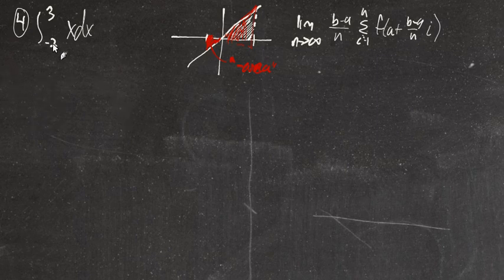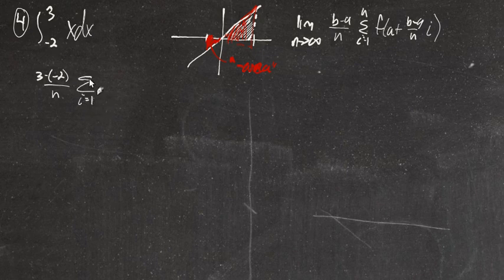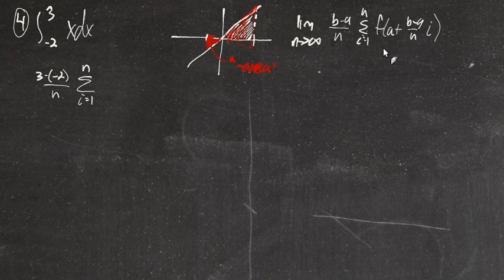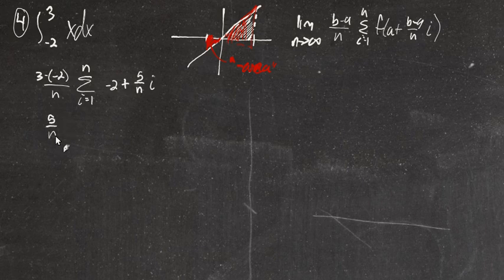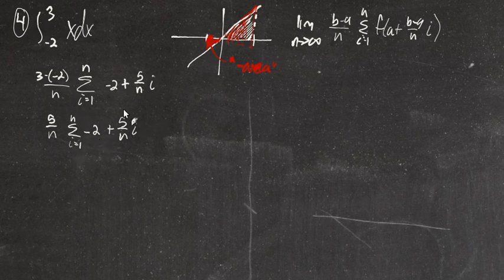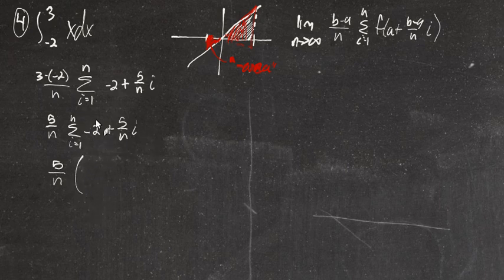Let's do that. We'll take b minus a — that's 3 minus negative 2, over n — times the sum from 1 to n of x, where x is the function. We're going to plug in for x: a is negative 2, plus b minus a which is going to be 5 over n, times i. So now we have 5 over n times the sum from 1 to n of negative 2 plus 5 over n · i. Now we're going to split these two apart into their own sums, remembering the properties of summation notation.